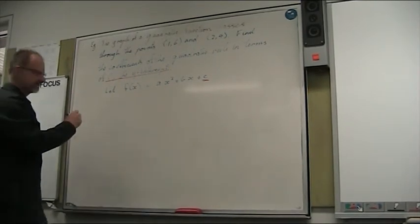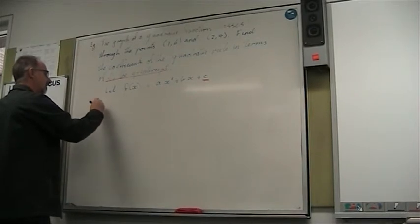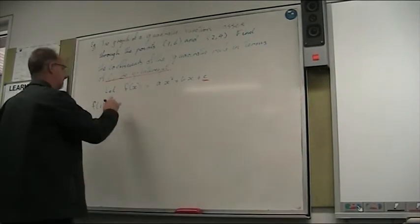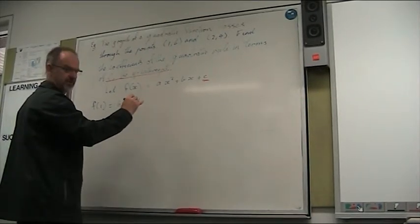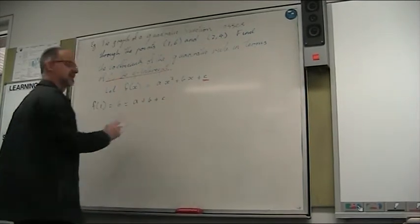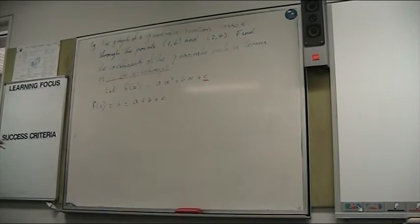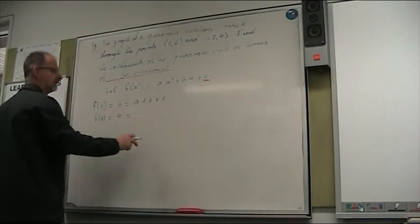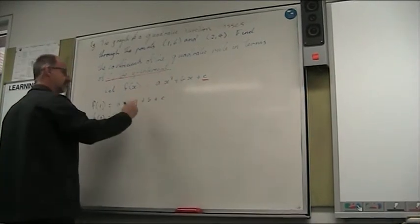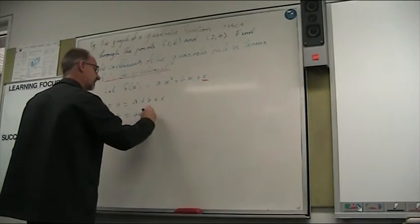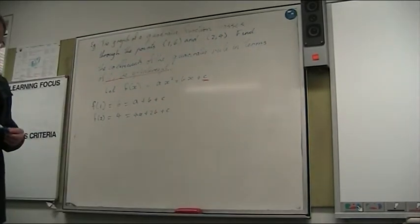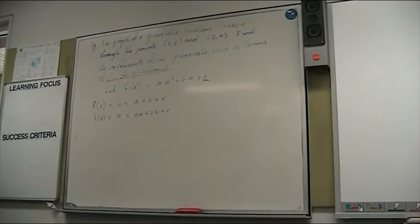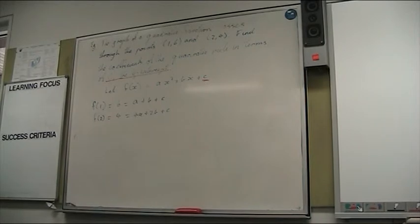All right. So let's put in what we do know, and then from that, see where that leads us. So f of 1. So when x is 1, f of x is equal to 6. So f of 1 equals 6, which would be a plus b plus c. f of 2, the answer's 4. 2 squared is 4, so it's 4a plus 2b plus c.